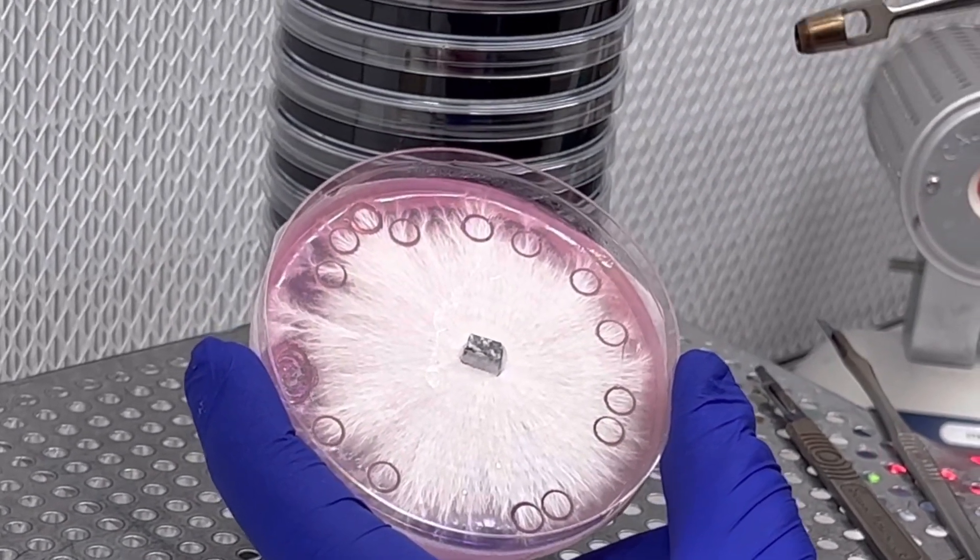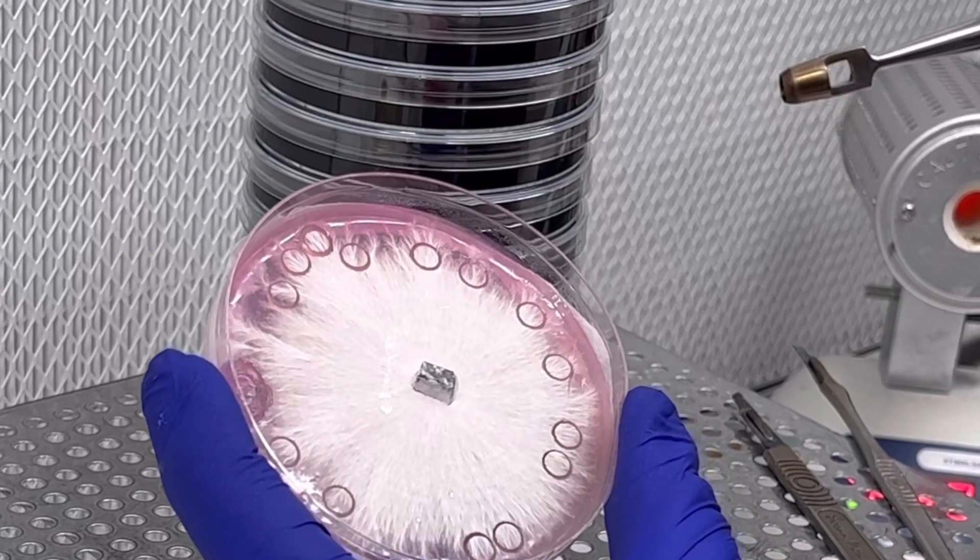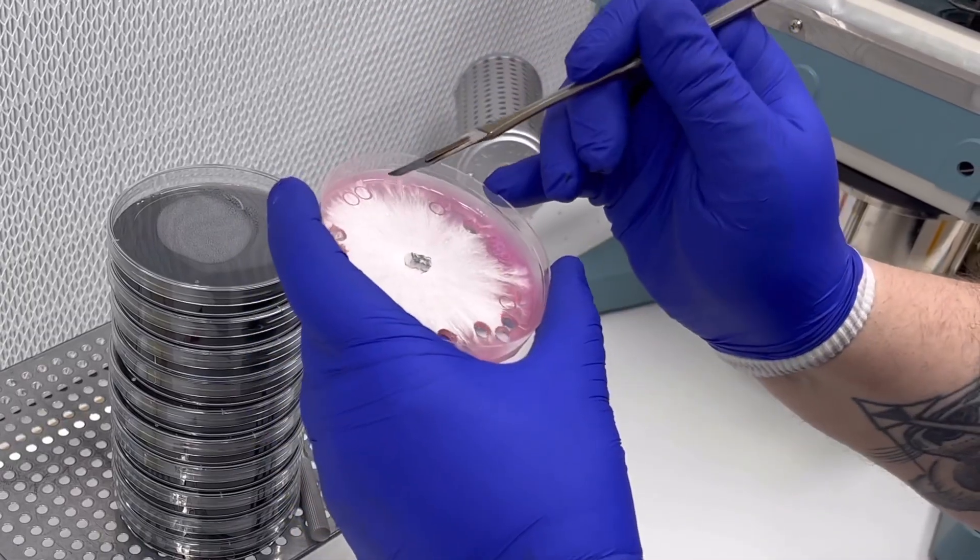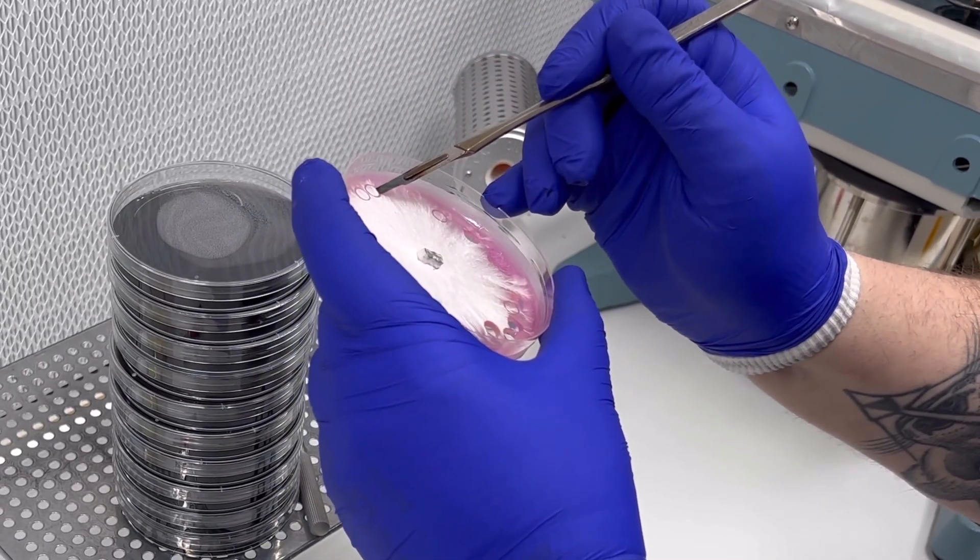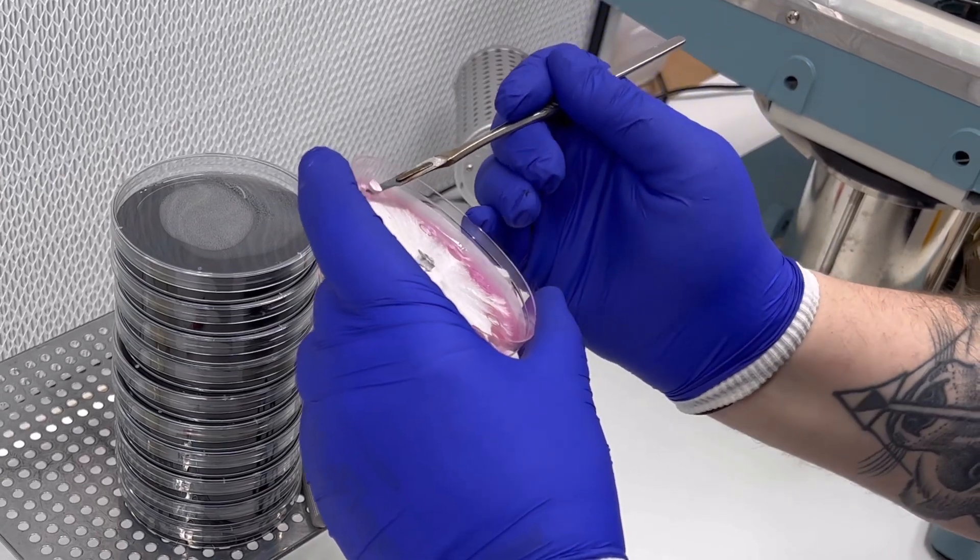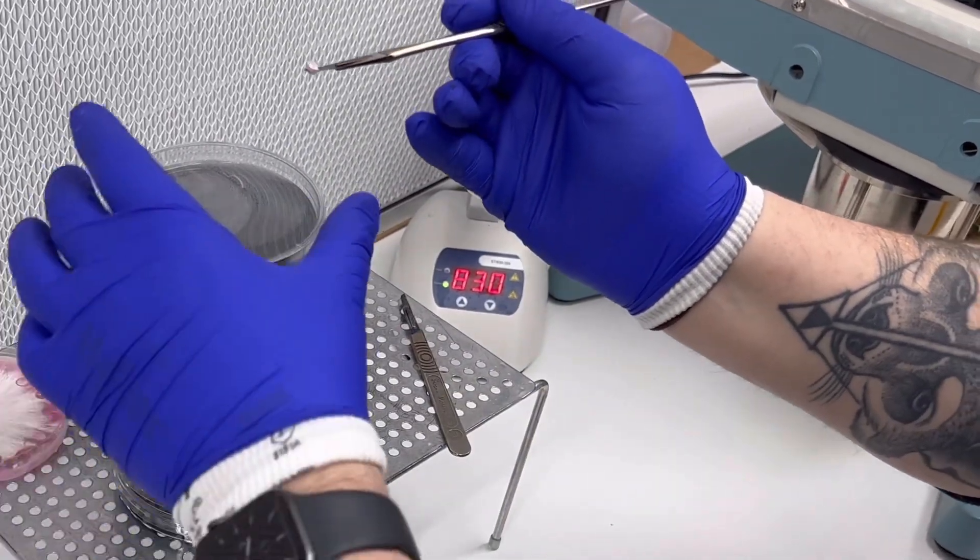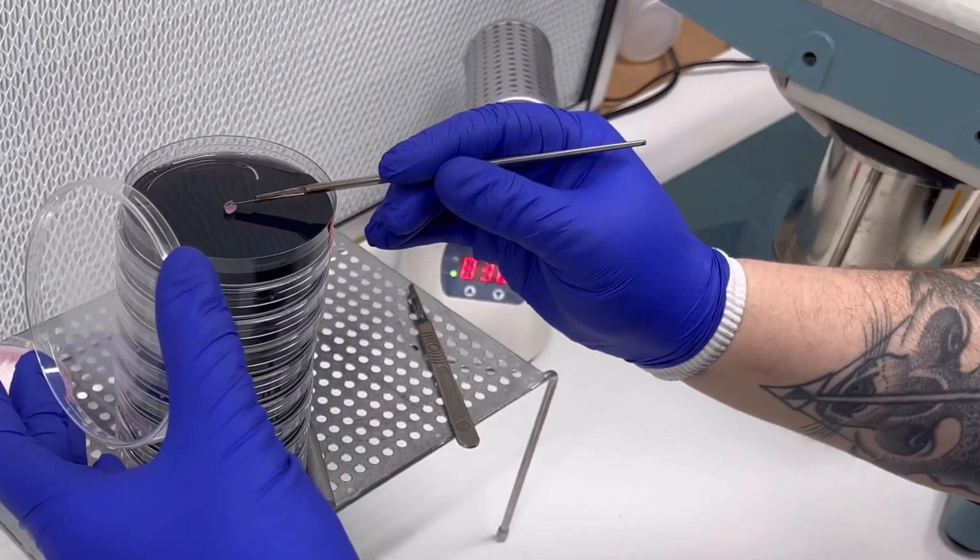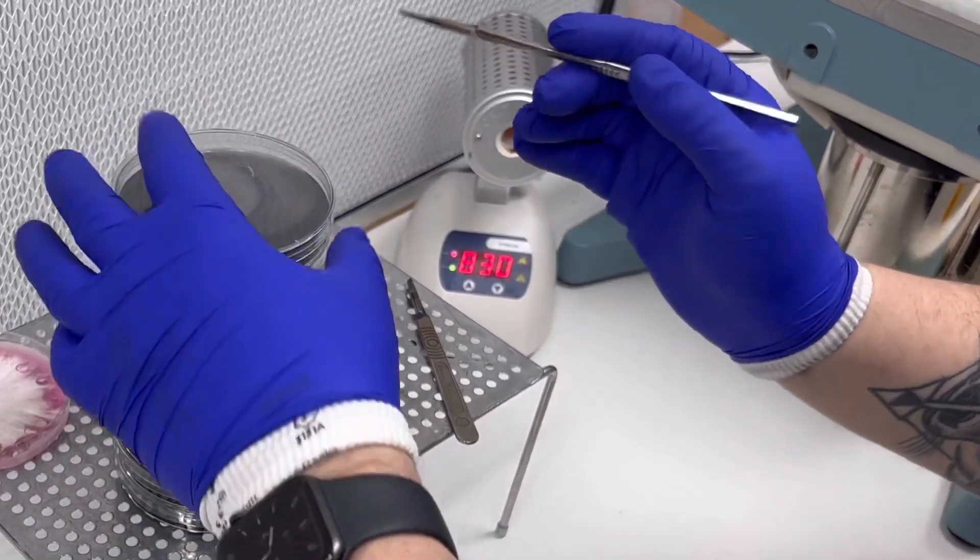We're now going to use a scalpel to just pick those circles out and place them upside down inside your new plate. Super easy, kind of makes transferring much simpler and easier than just cutting away at mycelium. There you go.